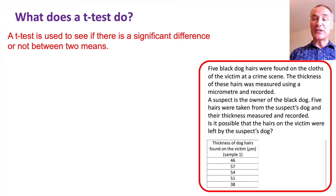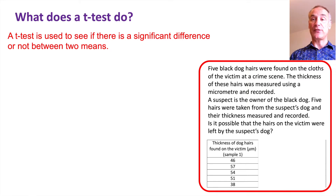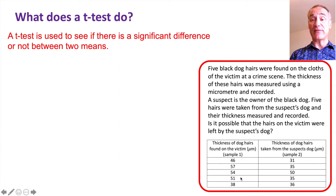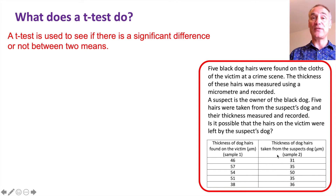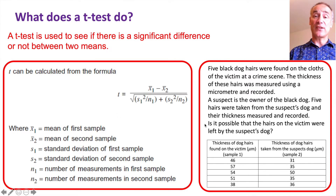They measured the thickness of the five hairs — that is sample one. They then found a suspect who had a black dog, took five hairs from the dog, and measured their thickness — this was sample two. We want to prove whether there is a significant difference between sample one and sample two. If there is a significant difference, the hairs found on the victim do not belong to the suspect's dog and the suspect can be cleared.